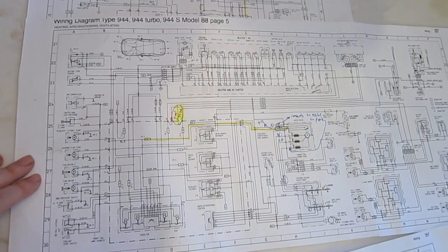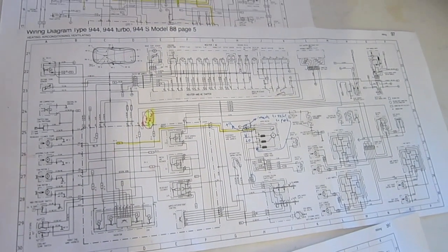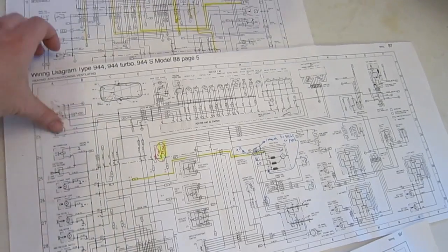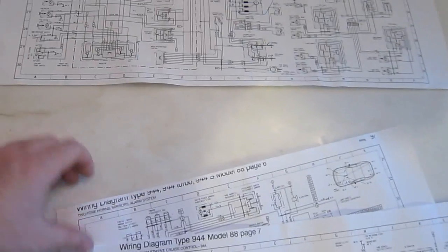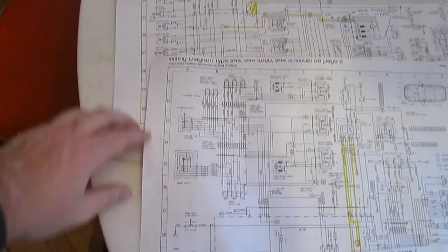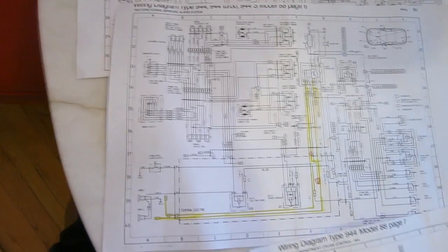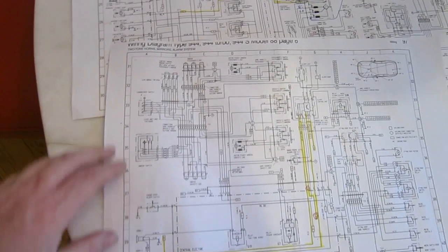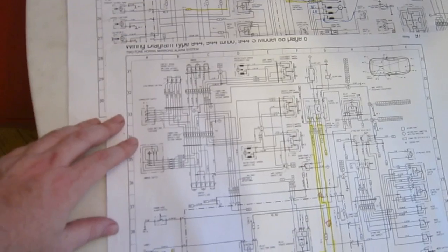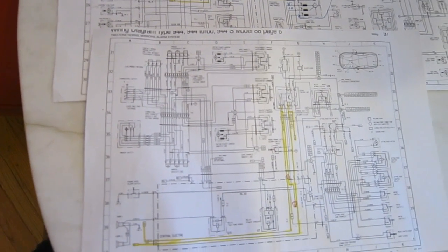So this is your blowers and your heat control and all of that stuff. And then we get to 30 through 31 on this sheet, and this is the two-tone horns, mirrors, and alarm system.